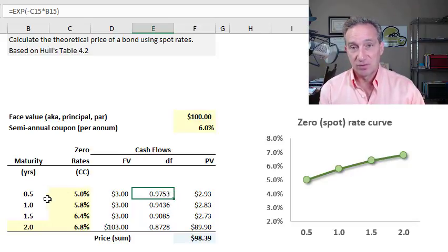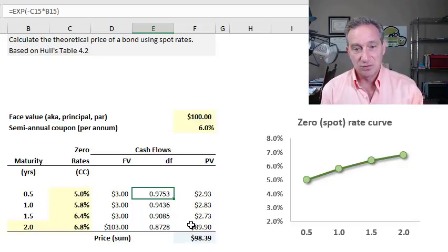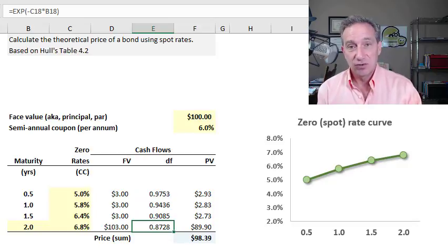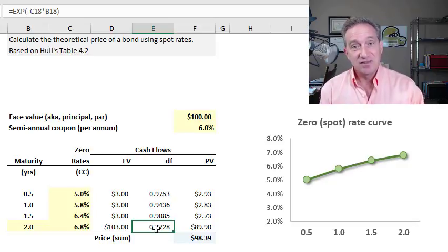And then we would call this here a six-month discount factor because it's the multiplier we'd apply to a cash flow received six months in the future. So that means we have a one-year discount factor, an 18-month discount factor, and a two-year discount factor. The set of discount factors is called a discount function.